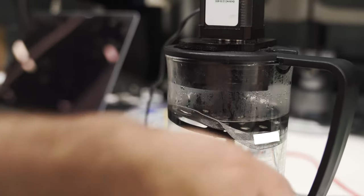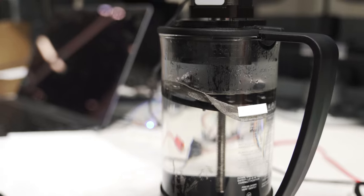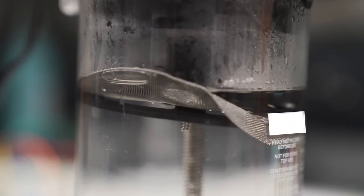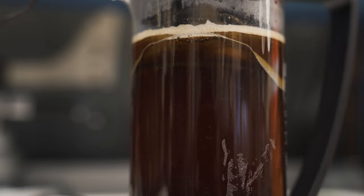So essentially, how it works is I took a cheap old little French press and strapped on a linear actuator to the top. Essentially what that does is it rotates the screw, which converts the motion into linear motion. So that way I attach my filter, I press a button, and it presses the coffee down when I'm ready.